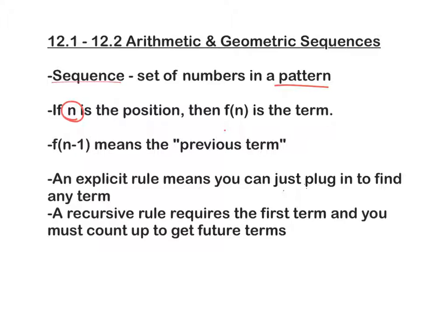N tells us the position, and f(n) tells us what the term is. So for example, if it says f(3) equals 8, that means the third term in the sequence is 8. So whatever the pattern is, the third number is 8. That's what that notation means.